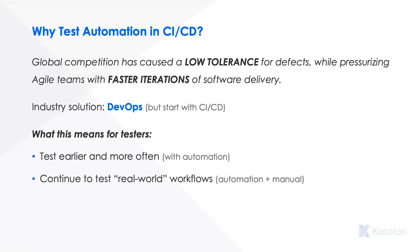Testing earlier and more often can be accomplished very efficiently with automation tools such as Katalon. The second aspect, though, is a bit more tricky — how do we also continue to test real-world workflows? These are the scenarios and processes that will actually be used by the end user of the system under test. It cannot be completely dependent on automation scripts alone; there has to be an aspect of manual exploratory testing as well. However, if you don't leverage automation in your CICD pipeline, you won't have time to do that exploratory testing.